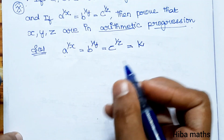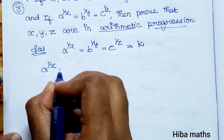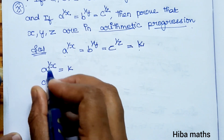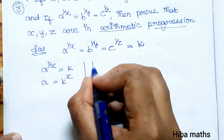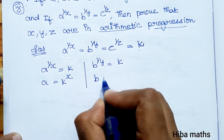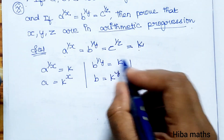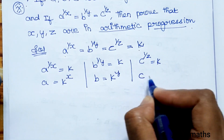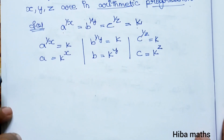Let a power 1/x equal to k. So a is equal to k power x. Therefore b power 1/y is equal to k, so b is equal to k power y. Similarly, c power 1/z is equal to k, so c is equal to k power z.